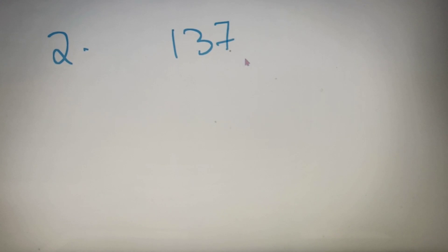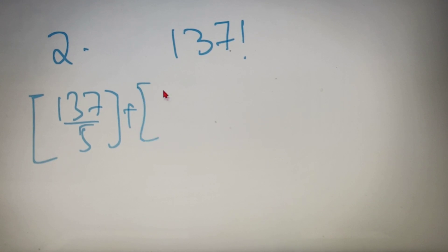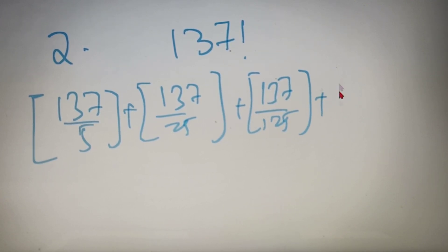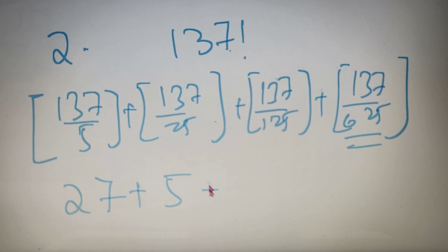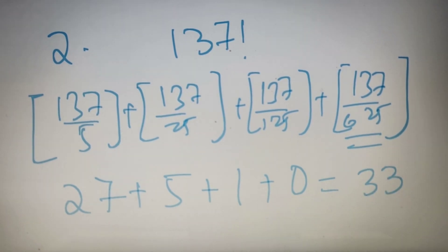For our second example, we have to find out the number of trailing zeros at the end of 137 factorial. We put 137 into the formula: floor(137/5) + floor(137/25) + floor(137/125) + floor(137/625). We go up to 625 because 137 is less than 625. The values come out to be 27, 5, 1, and 0 respectively, and their sum is 33. Therefore, the number of trailing zeros at the end of 137 factorial is 33.